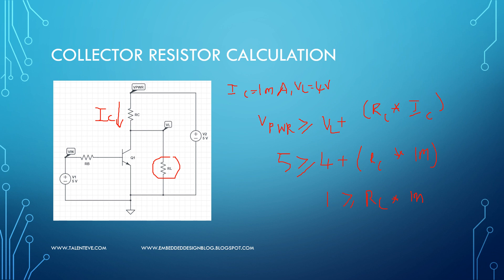1K should be greater than or equal to 1K, that means RC should be less than or equal to 1K here. So if you have RC less than or equal to 1K, then your desired configuration of the requirement of 4 volts and the load of 1 milliampere surface. This is how you calculate the collector resistor.